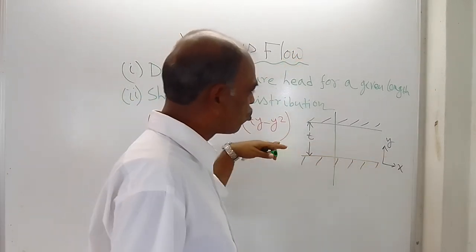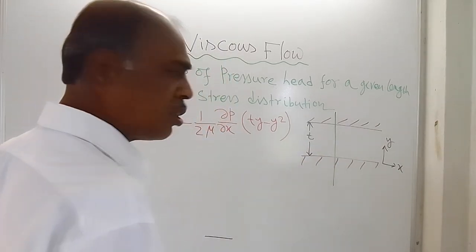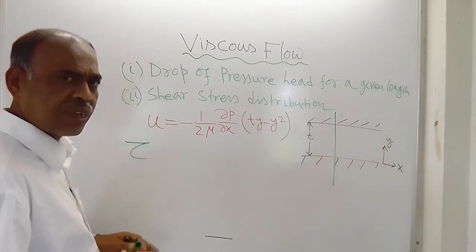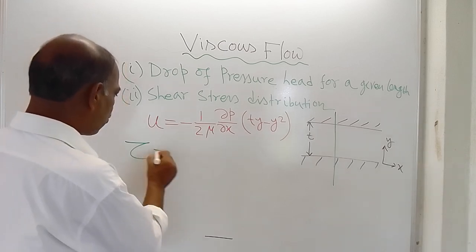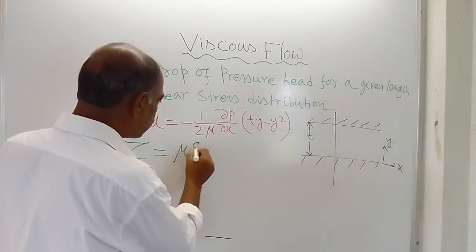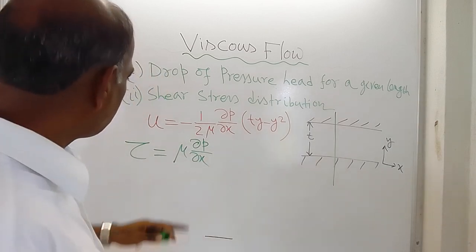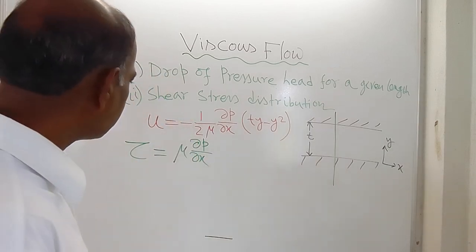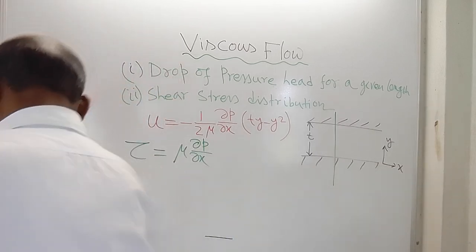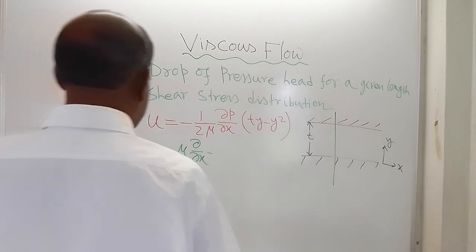So what we need to do first, we take Newton's law of viscosity. According to Newton's law of viscosity, tau (that is the shear stress) is equal to mu (that is coefficient of dynamic viscosity) into del u del y. So this was Newton's law of viscosity. U is velocity, not pressure.